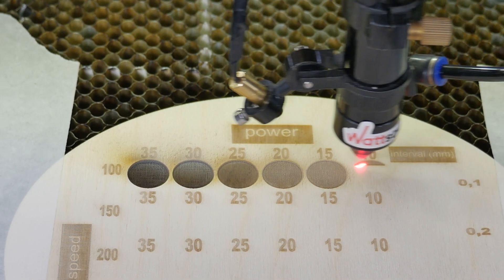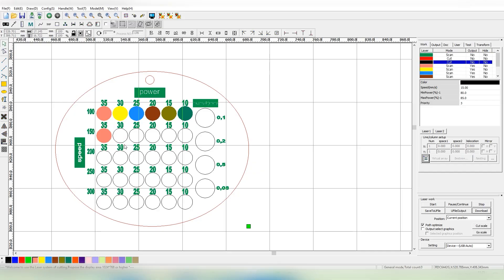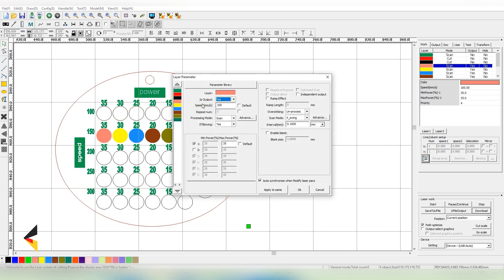Wait until the machine has finished engraving. Back to the program and move on to the next row of the figures, setting them to the colors of the previous squares and changing only the processing speed up to 150 millimeters per second.